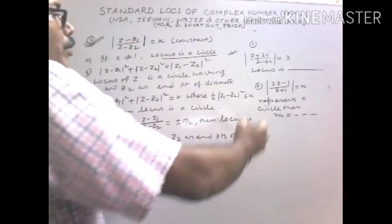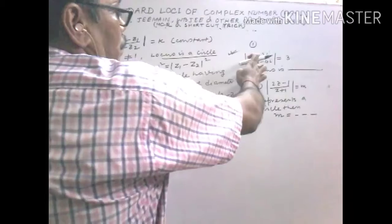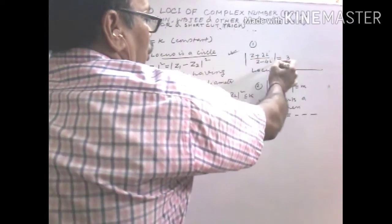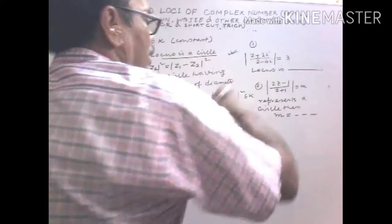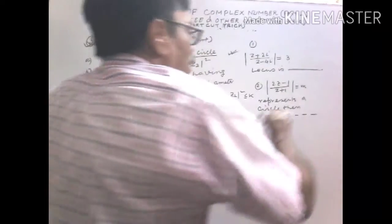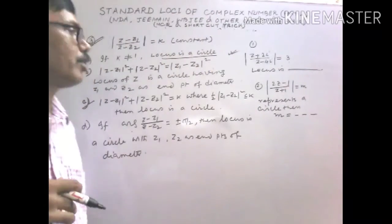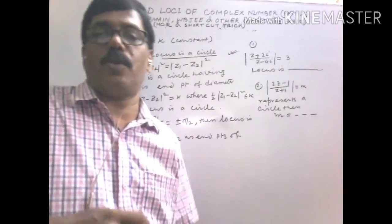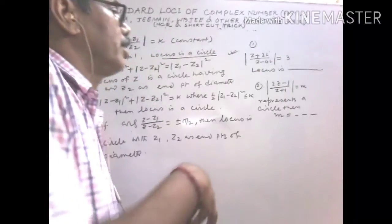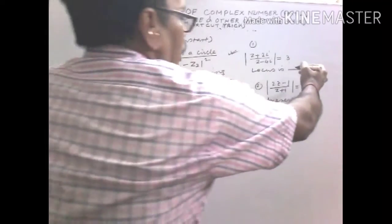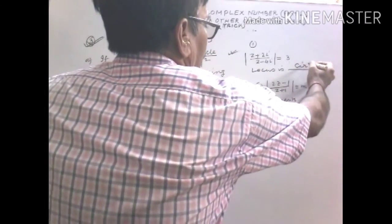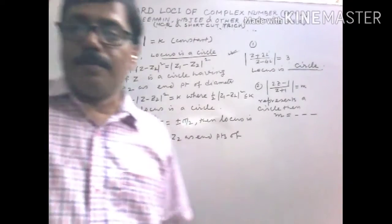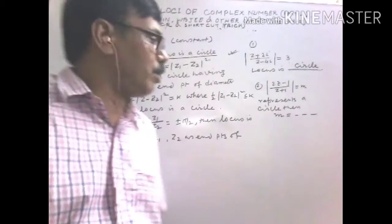Application number 1: |(Z + 2i)/(Z - 4i)| = 3. Here K = 3, which is not equal to 1, so obviously it is a circle.